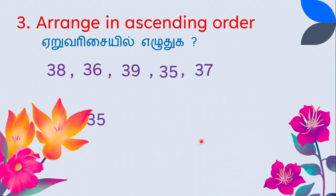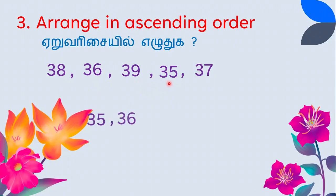In this example with two-digit numbers, we are going to compare the tens place first to arrange in ascending order. What is the small number? 35, 36, 37, 38, 39 — arranged from small to big.